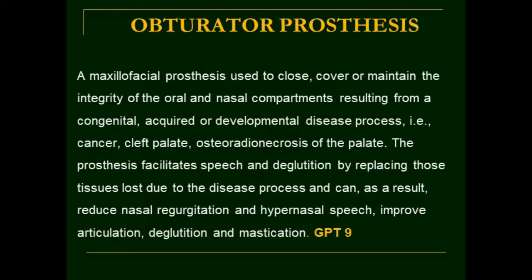The GPT-9 definition of obturator prosthesis: it is a maxillofacial prosthesis used to close, cover or maintain the integrity of the oral and nasal compartments resulting from a congenital, acquired or developmental disease process, such as cancer, cleft palate, or osteoradionecrosis of the palate. The prosthesis facilitates speech and deglutition by replacing tissues lost due to the disease process, and can reduce nasal regurgitation and hypernasal speech, and improve articulation, deglutition and mastication.